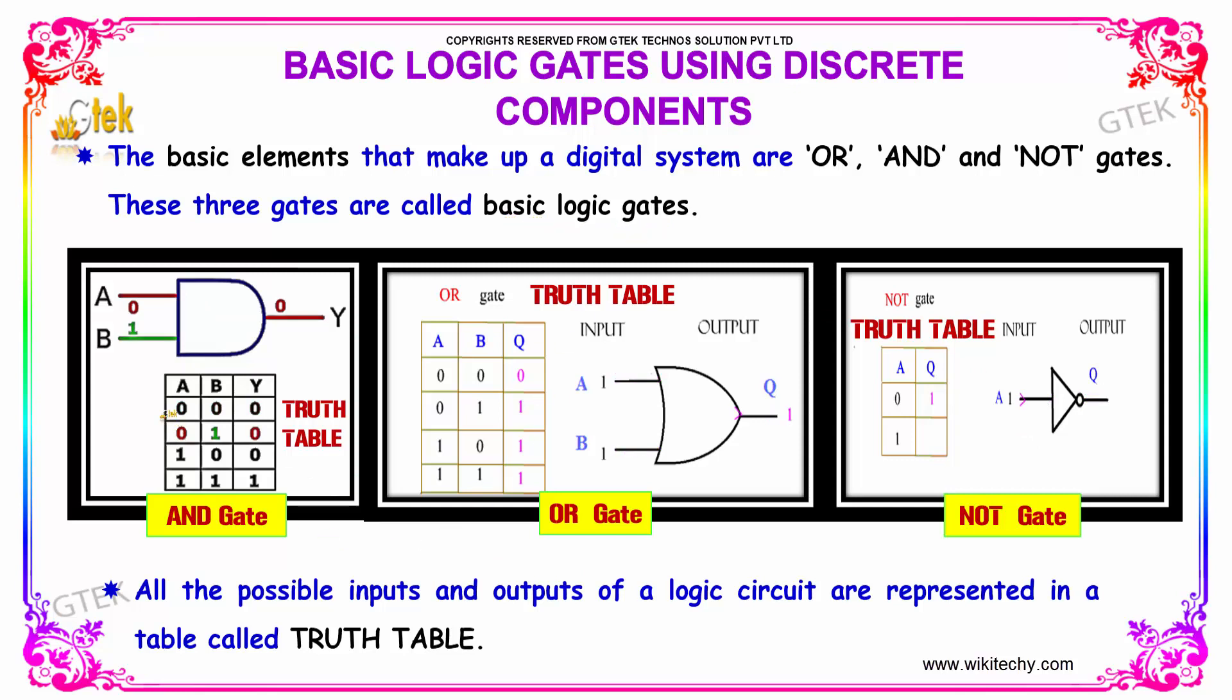All the possible inputs and outputs of a logic circuit are represented in a table called a truth table.